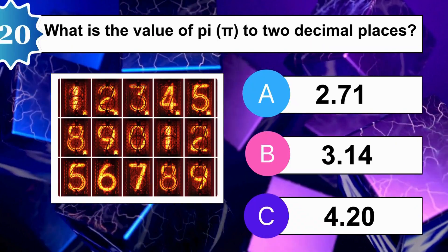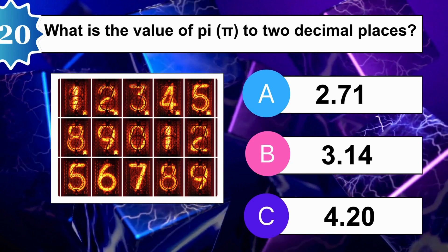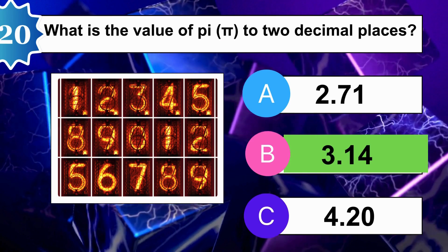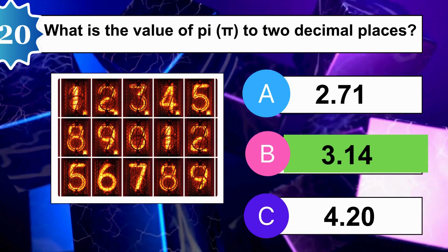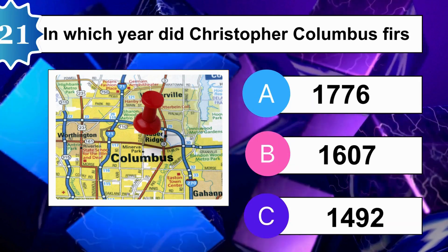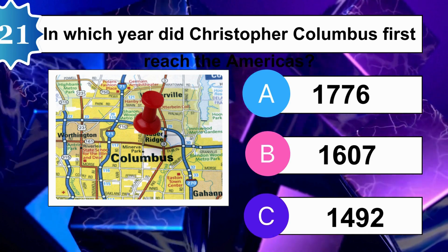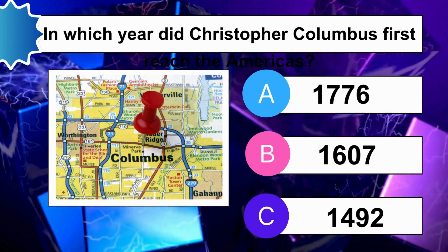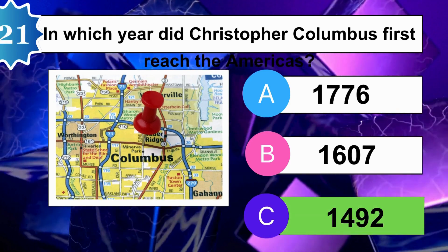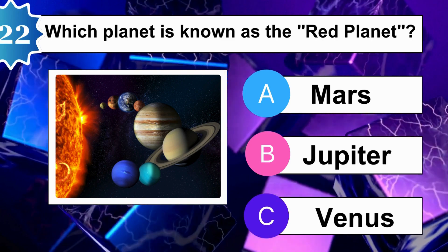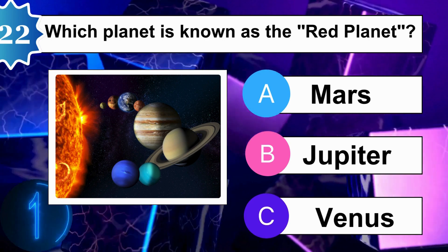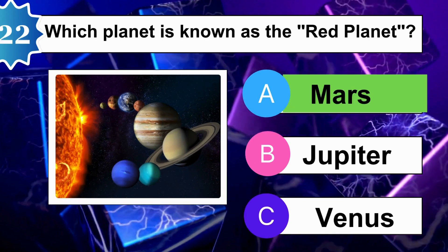What is the value of pi to two decimal places? Who wrote Alice's Adventures in Wonderland? B is correct. In which year did Christopher Columbus first reach the Americas? C is correct. Which planet is known as the Red Planet? A is correct.